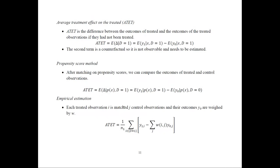In empirical estimation of ATET, for each treated observation i matched with j control observations, the control outcomes Y0 are weighted by w(i,j). The ATET equals one divided by n1 (the number of treated observations), summed over all treated observations, of Y1_i minus the weighted sum of Y0_j over all matched controls j.